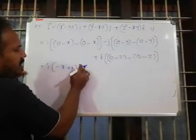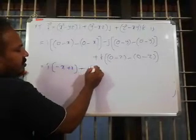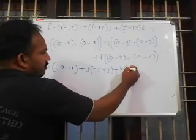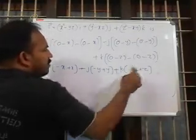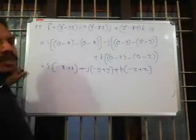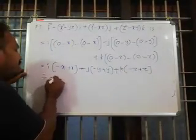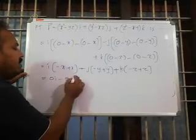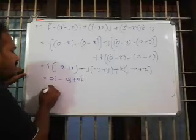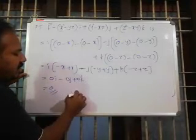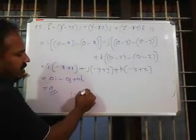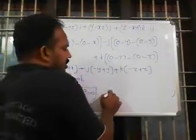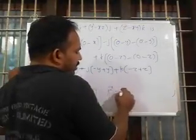After differentiating, the result is 0i minus 0j plus 0k, which equals zero. Since curl of F equals zero, F is irrotational.